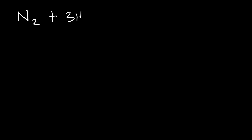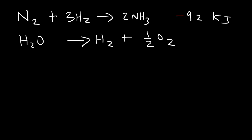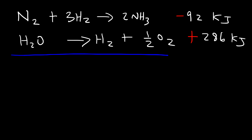This video is about Hess's Law and how we can calculate the enthalpy change of a reaction using it. Consider this reaction: nitrogen gas reacts with hydrogen gas to produce ammonia, with ΔH = -92 kJ. Then we have another reaction: water decomposes to hydrogen gas and oxygen gas, with ΔH = +286 kJ. Using those two reactions, how can we calculate the enthalpy change of a target reaction?